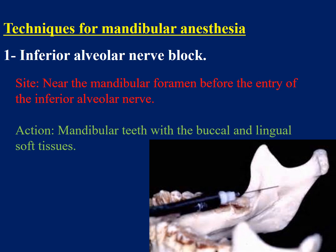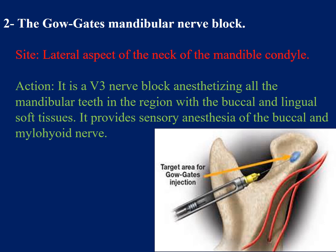The techniques of mandibular anesthesia: the most widely used is the inferior alveolar nerve block. The site is near the mandibular foramen before the entry of the inferior alveolar nerve. It anesthetizes the mandibular teeth with the buccal and lingual soft tissue. The Gow-Gates mandibular nerve block site is the lateral aspect of the neck of the mandibular condyle, and it is a V3 nerve block anesthetizing all mandibular teeth with buccal and lingual soft tissues, also providing sensory anesthesia to the buccal and mylohyoid nerve.